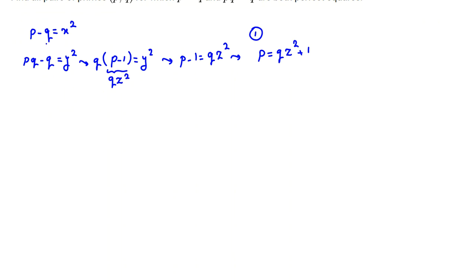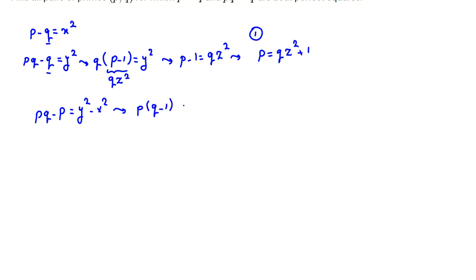In the next step, we have negative Q in both equations. If we subtract the second minus the first, we have PQ minus P equals Y squared minus X squared. Factoring P on the left-hand side gives P times (Q minus 1) equals (Y minus X)(Y plus X).